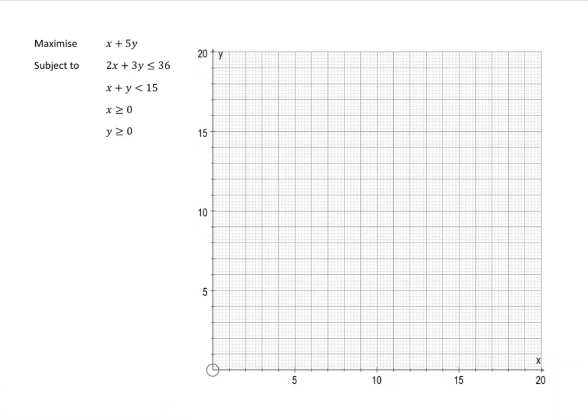In this video, we are going to maximise x plus 5y, subject to these constraints: 2x plus 3y is less than or equal to 36, and x plus y is less than 15, and x is greater than or equal to 0, and y is greater than or equal to 0.